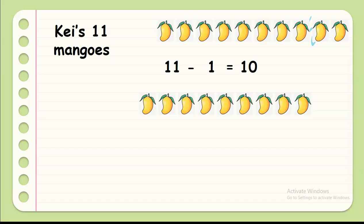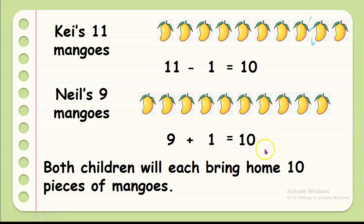And now, if it is going to be a number sentence, it will be 11 minus 1 equals 10. Now, since Neil got only 9 mangoes, then Kay gave him 1 from his mangoes. That's why he also have 10 because 9 plus 1 equals 10. Both children will each bring home 10 pieces of mangoes. But what do you notice in the number sentences? Yes, both have the same answers. Both have 10 as their answer.